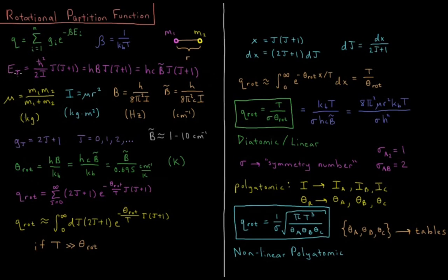The energy equals h-bar squared over 2i times quantum number j times j plus 1. This is also equal to hb times j times j plus 1, or hcb-bar times j times j plus 1, where b is the rotational constant in Hertz, Planck's constant divided by 8 pi squared moment of inertia. And b-bar is the rotational constant in wave numbers, inverse centimeters, which is h over 8 pi squared c mu r squared.